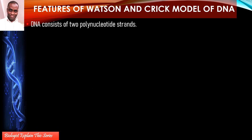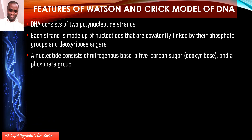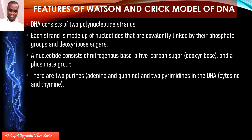Let's look at the features of Watson and Crick's model of DNA. DNA consists of two polynucleotide strands or chains. Each strand is a chain of several nucleotides, which can be long or short depending on the organism. The sugar and phosphate are bonded covalently by what is referred to as a phosphodiester bond, linking the phosphate to the sugar. The bases stick out at approximately 90 degrees from the sugar-phosphate backbone.